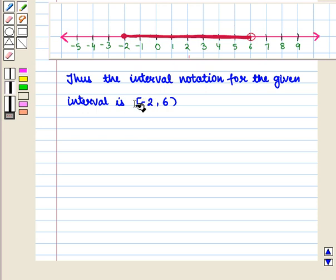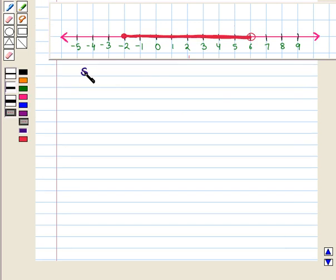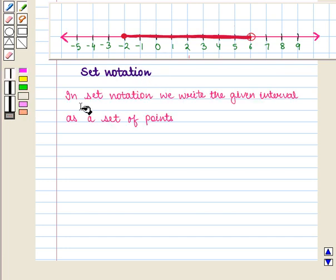Now let us discuss about set notation. In set notation we write the given interval as a set of points. From the given number line, from minus 2 to 6, we have the set of all real numbers greater than or equal to minus 2 and less than 6.